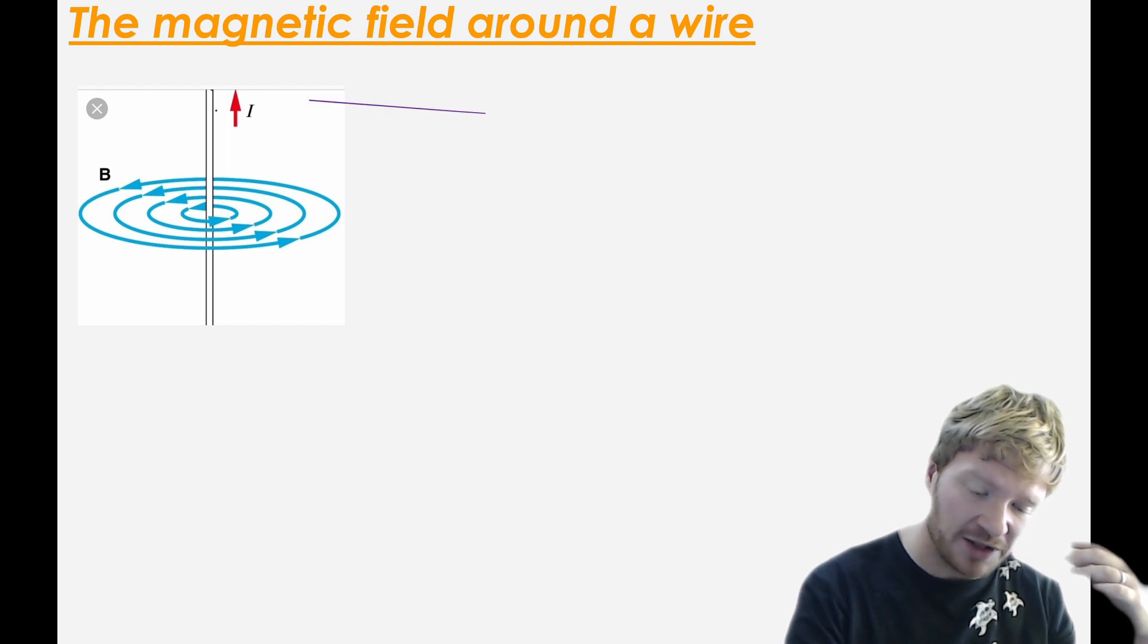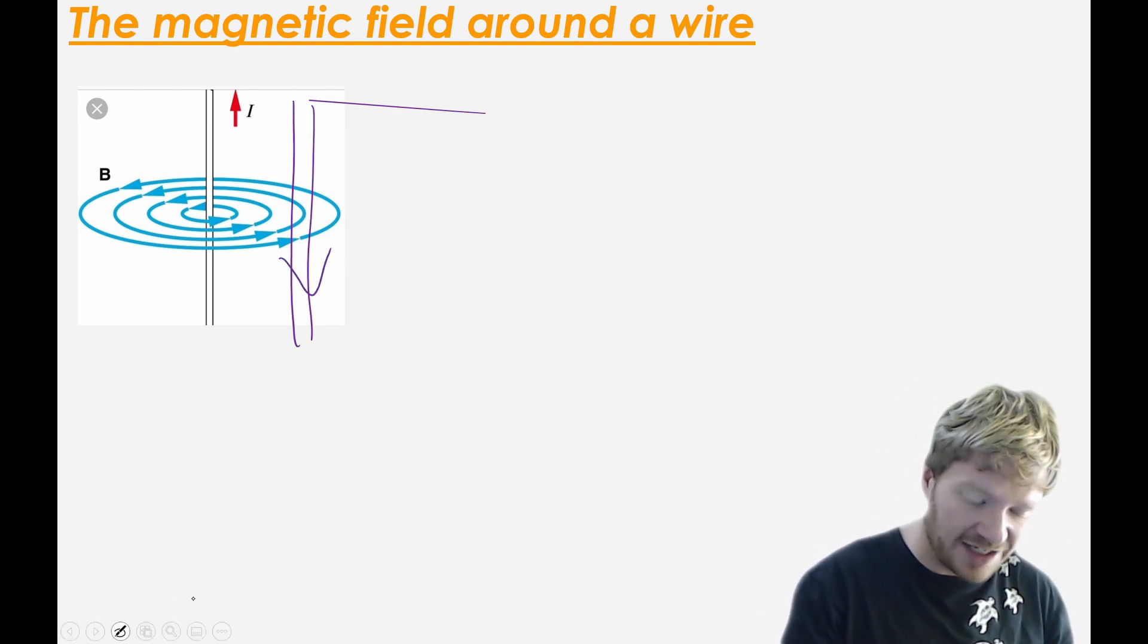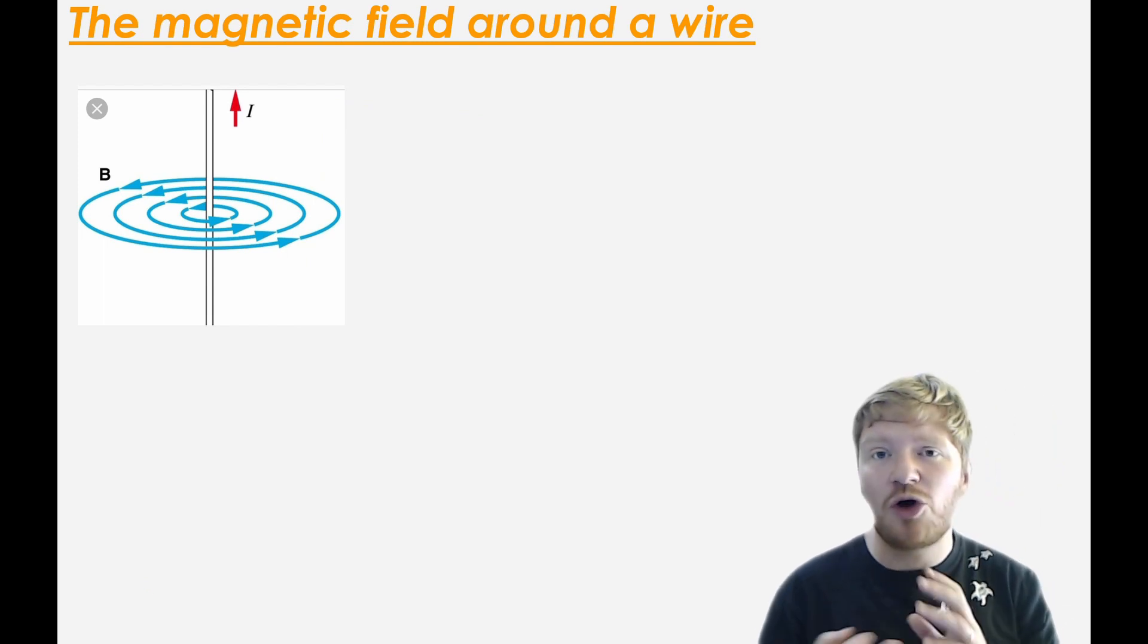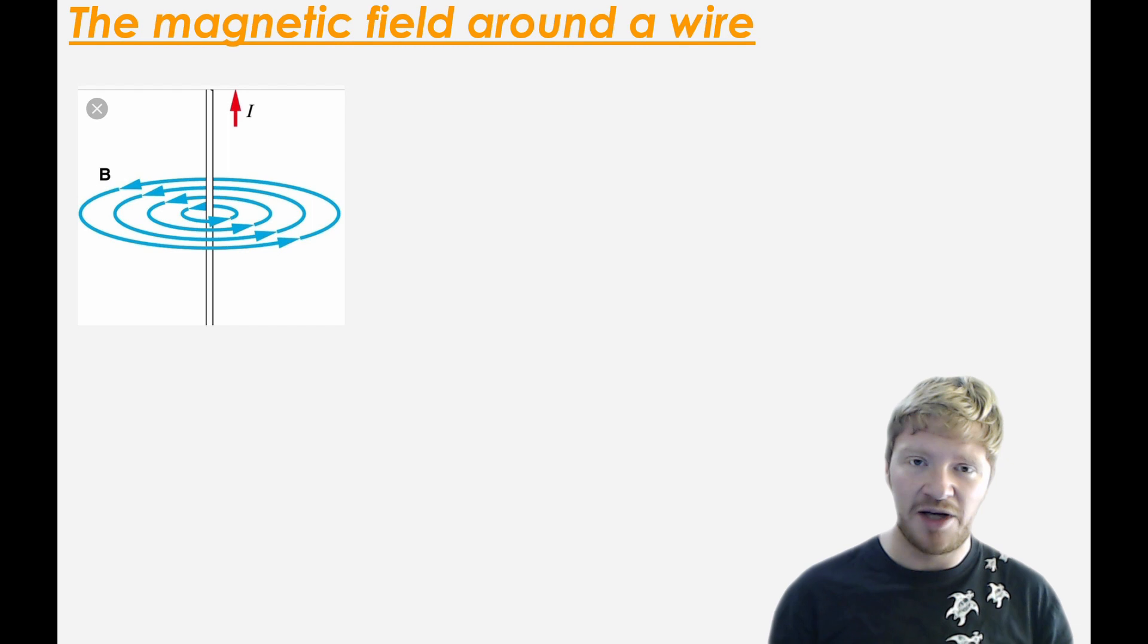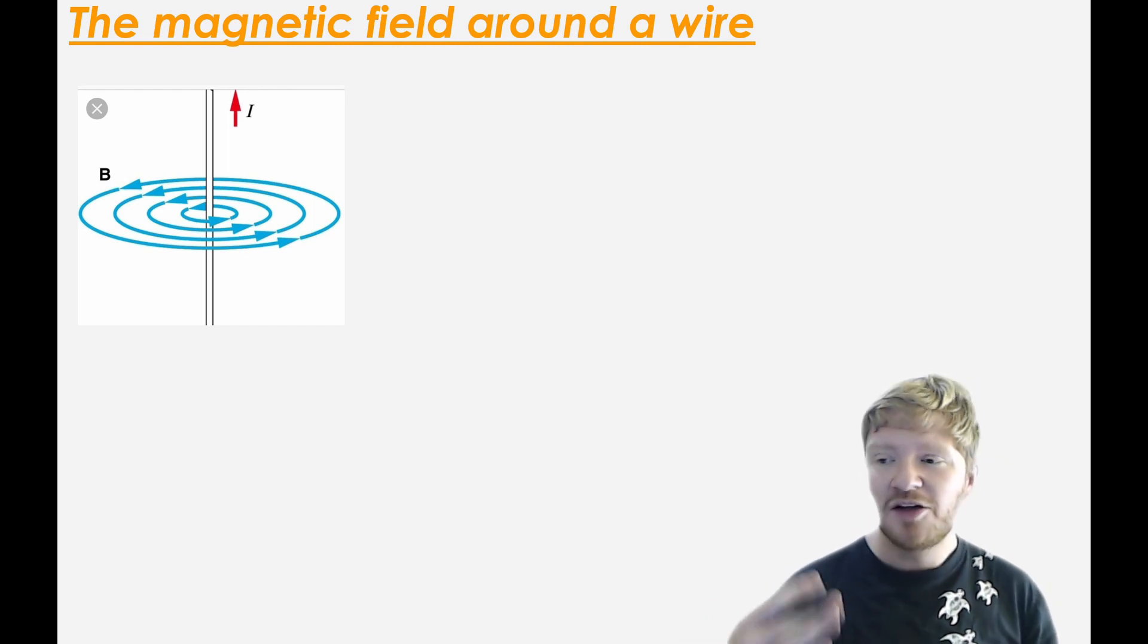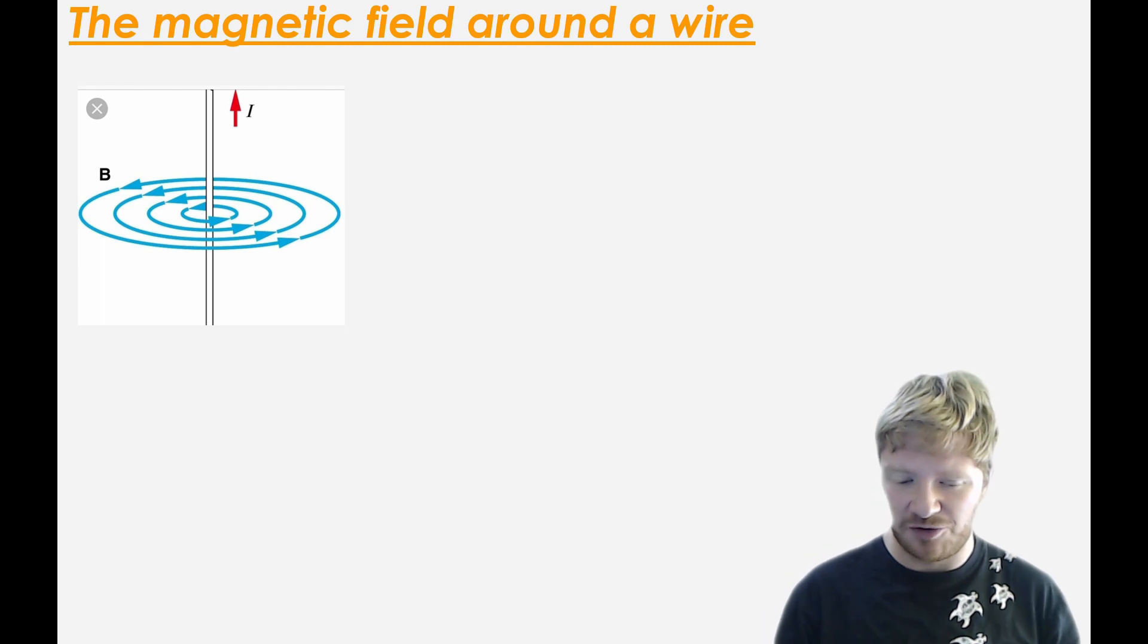So what we'd often do, for example, if I have one wire going like this with a magnetic field around it, I might put a different wire with a current going in the opposite direction. And those two fields will then cancel each other out. So you don't often notice this. Even if there is a field around a wire, around one single bit of wire, the field is always very, very weak. So you wouldn't normally notice this in everyday life.